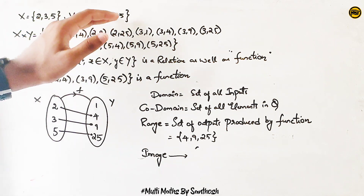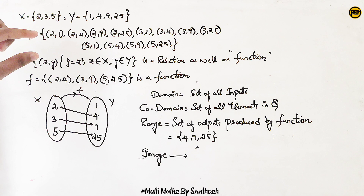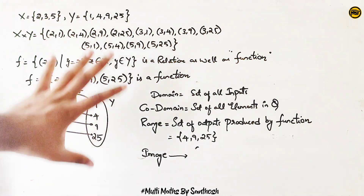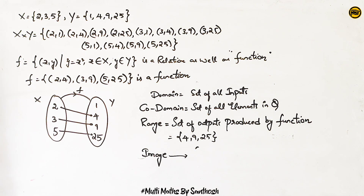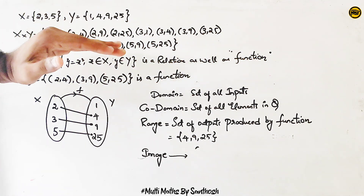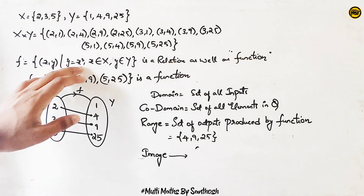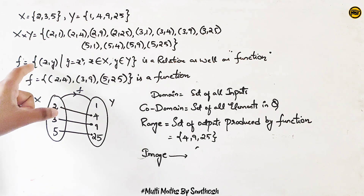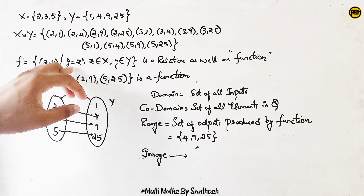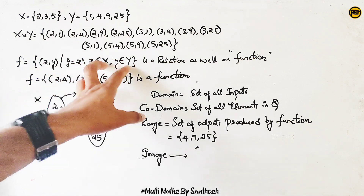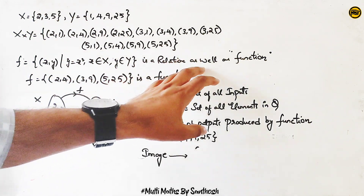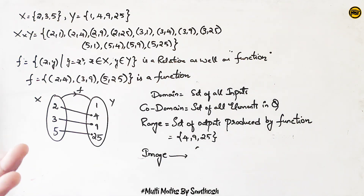H is equal to the set y — a set of elements. We are doing a Cartesian product. One relation is going to be defined. What is the relation? Y is equal to x squared. The set of ordered pairs that satisfies this relation: F is equal to the set of ordered pairs (x, y) such that y = x², where x belongs to X and y belongs to Y. This relation is also a function.